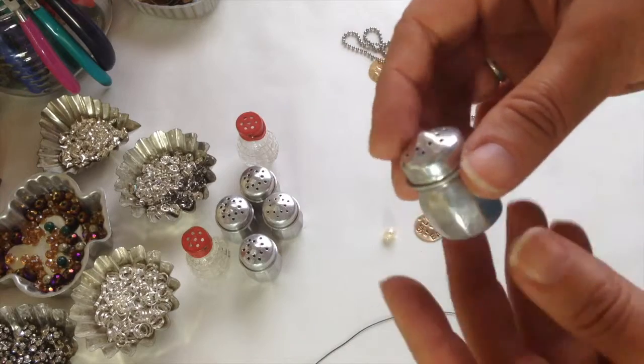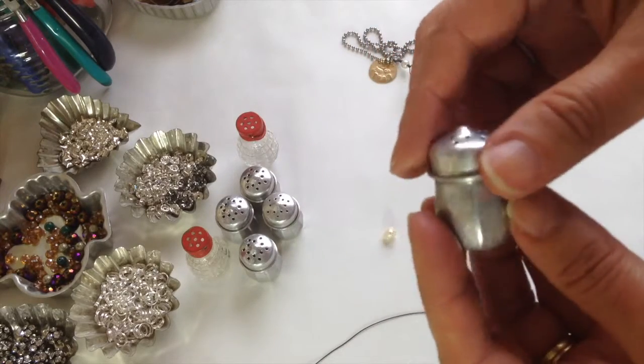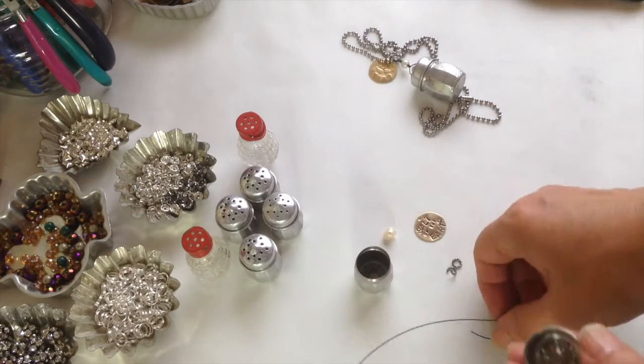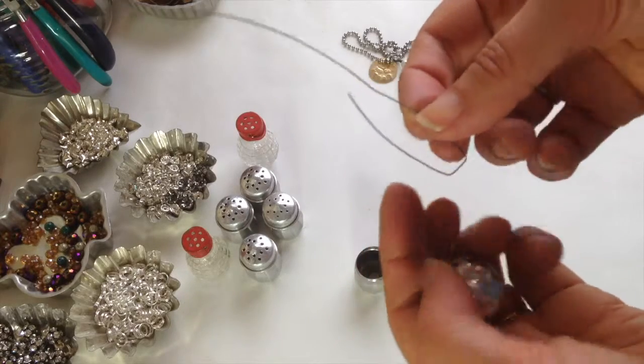So you take the vintage salt shaker. This is just an aluminum one. I find them in an antique shop, so you can get them on eBay or just anywhere else you can buy old stuff.